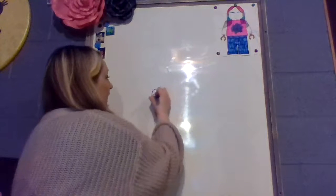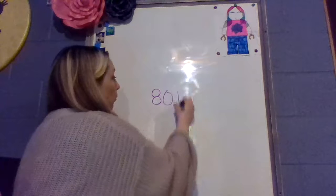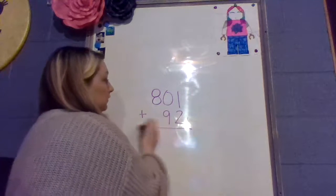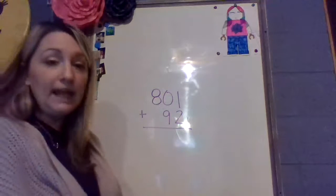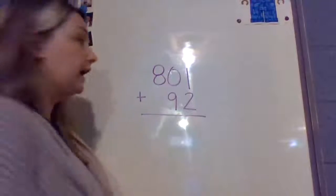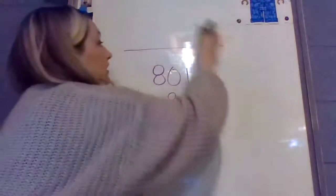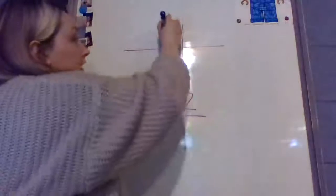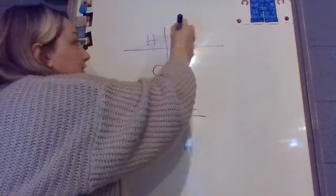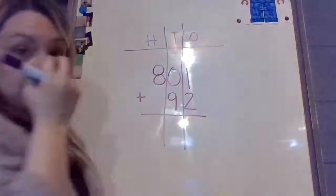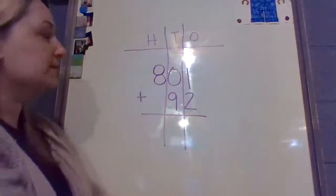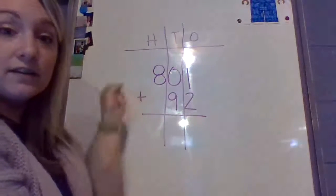All right, so let's start with our addition problem. Today we're going to do 801 plus 92. I am going to do my HTO. Keep it really nice and organized so that I don't accidentally add something that wasn't supposed to be added. So I have my 1's place, my 10's place, and my 100's place.